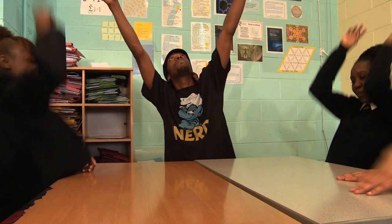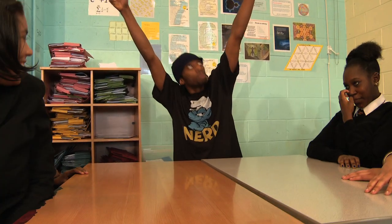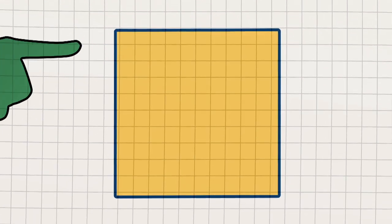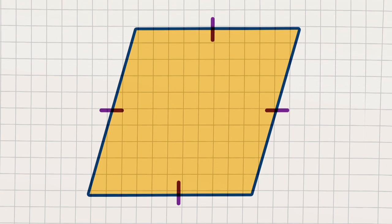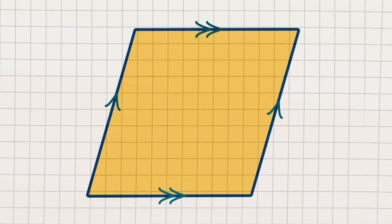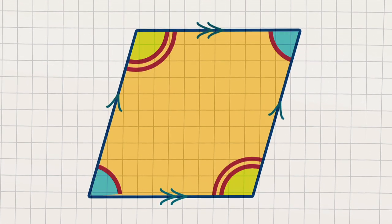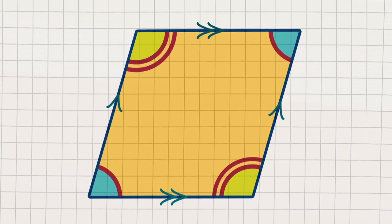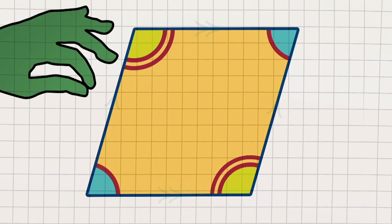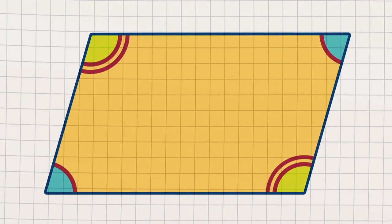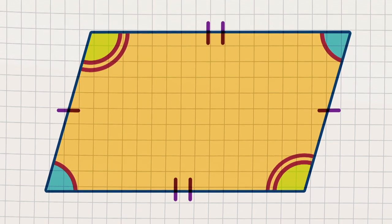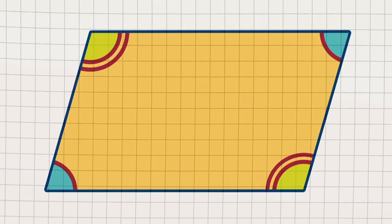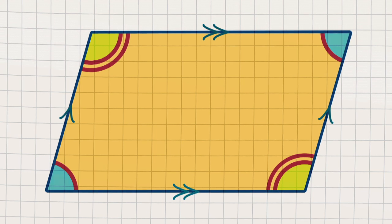Take a square and give the top side a good push — there are still four equal sides, but it's now a rhombus, with two pairs of sides that lie parallel. It's only the opposite angles that are equal. For parallelograms, give the rhombus a stretch — now only the opposite sides will be equal in length, opposite angles are also alike, and we can see two pairs of parallel sides.